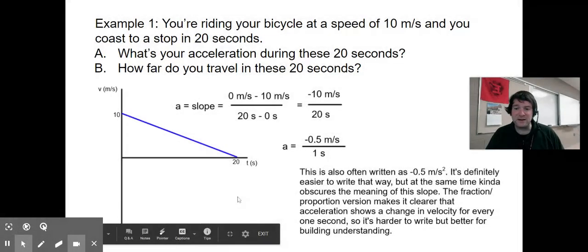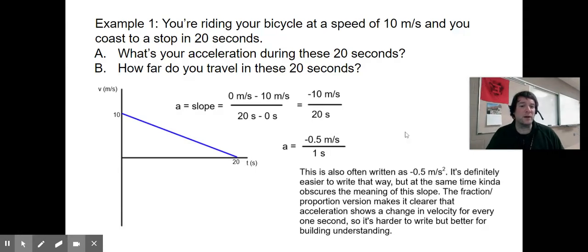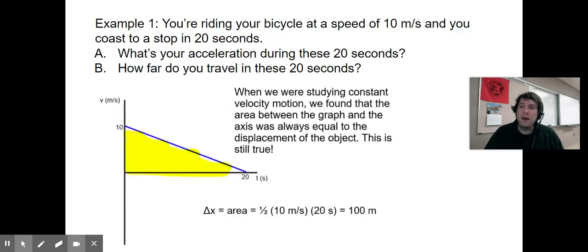So it's a whole lot easier, I think, to make sense out of what does this mean when we are writing our accelerations out in this longer format of negative 0.5 meters per second for every one second. But it is mathematically correct to write negative 0.5 meters per second squared.